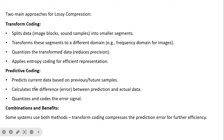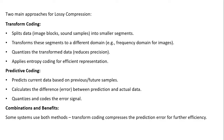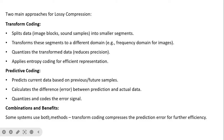The second approach is predictive coding. In predictive coding, it predicts the current data based on previous or future samples — a similar method is applied to reduce interpixel redundancy. It also calculates the difference between the prediction and the actual data, then quantizes and codes the error signal. In some methods, these two approaches are combined: transform coding compresses the prediction error for further efficiency.